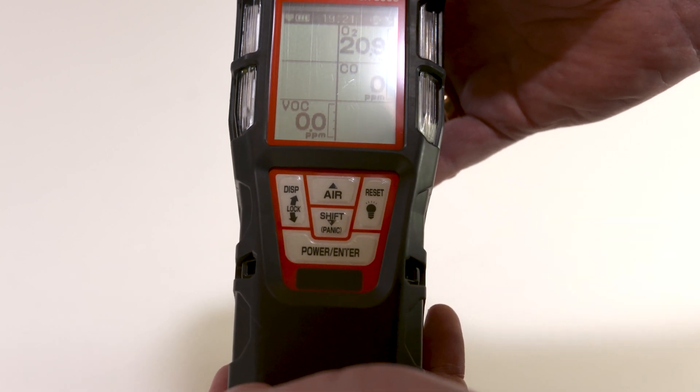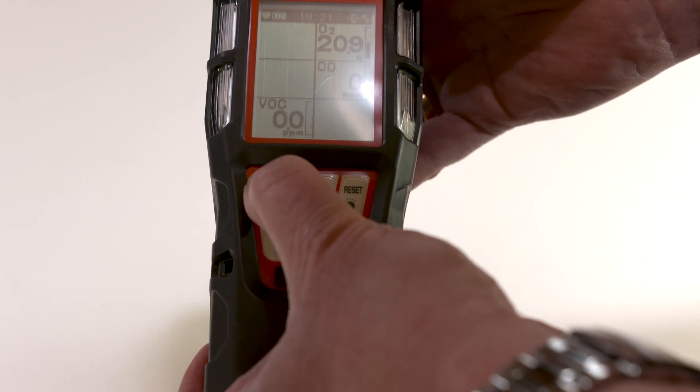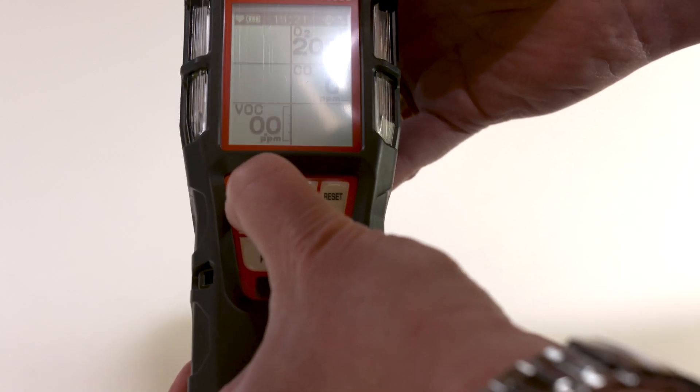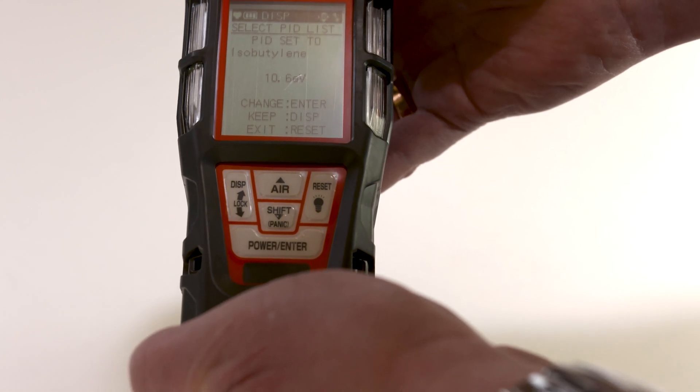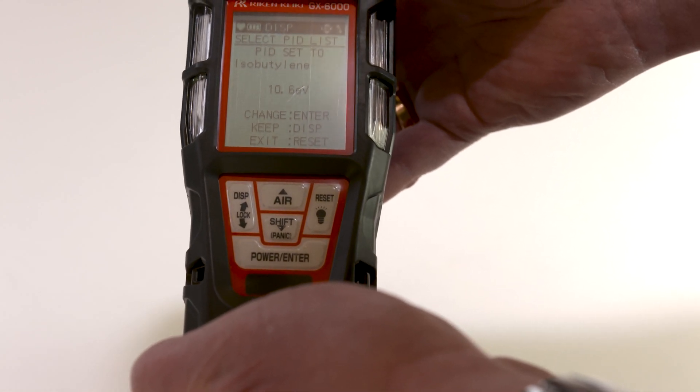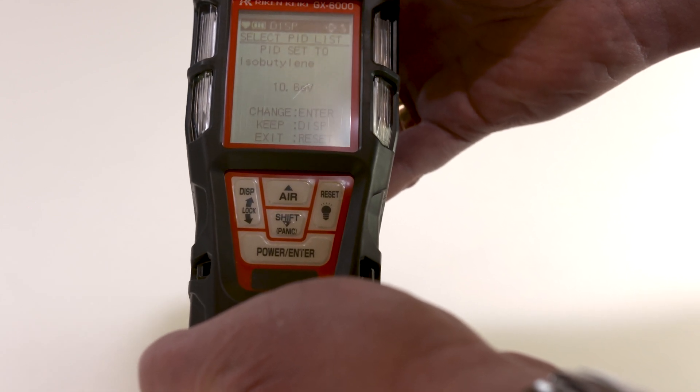Press the display button until the display shows PID list screen. The screen shows PID set to ISO-butylane. Press the enter button.